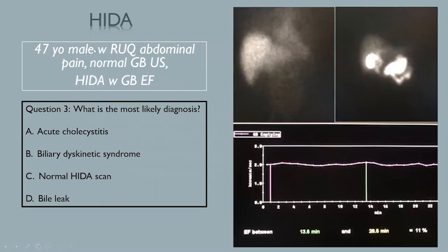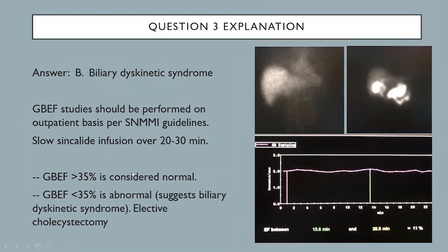This is a 47-year-old male with right upper quadrant abdominal pain with normal gallbladder ultrasound. The HIDA scan is done with gallbladder ejection fraction. Radiotracer activity is seen in the liver parenchyma with excretion into the bile ducts and into the small bowel, and radiotracer accumulates in the gallbladder — initial imaging shows normal physiologic activity. However, the gallbladder ejection fraction is 11% GBEF, which is less than 35% and therefore abnormal, suggesting biliary dyskinetic syndrome. These patients would typically get elective cholecystectomy if they have significant abdominal symptoms.